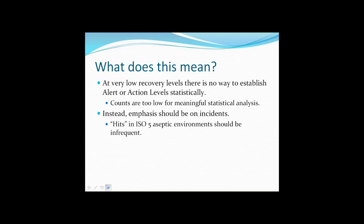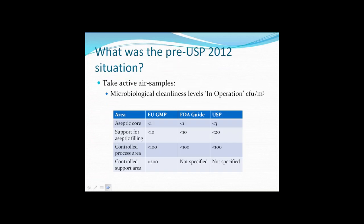Looking at what the USP considers an acceptable starting point for incidents—previously, with EU GMP Annex 1, the 2004 FDA guide, and the previous version of the USP, the numerical values for active air samples for clean rooms in the operational state were essentially identical, albeit with the USP being slightly higher. So the situation was relatively harmonized.